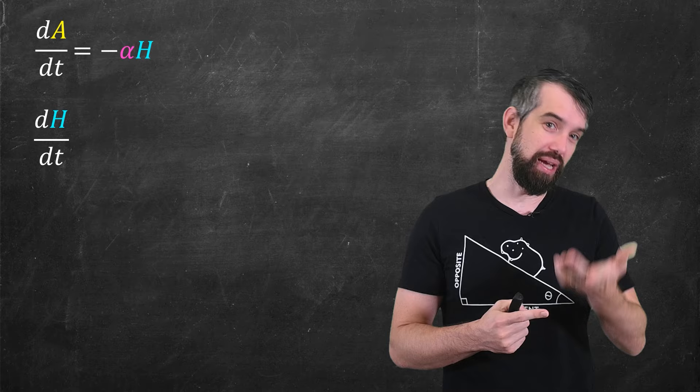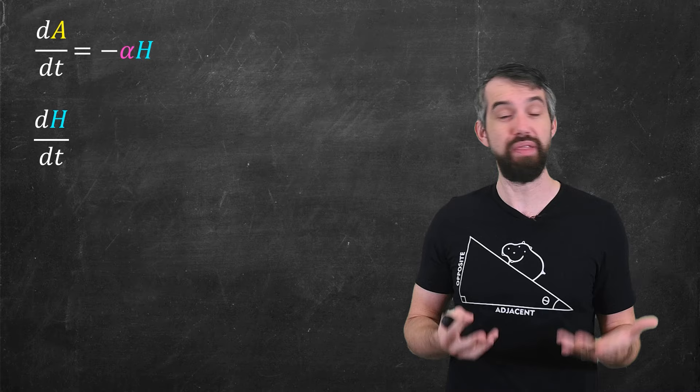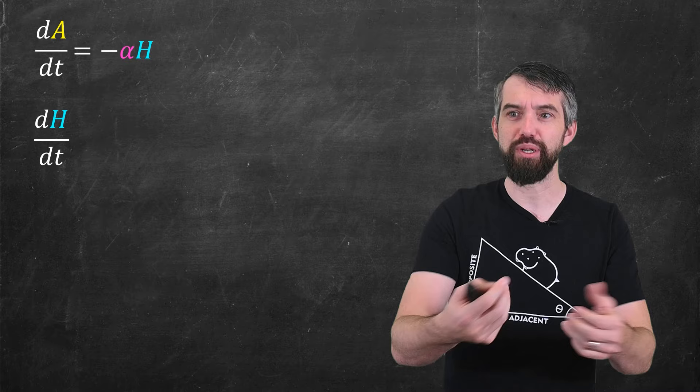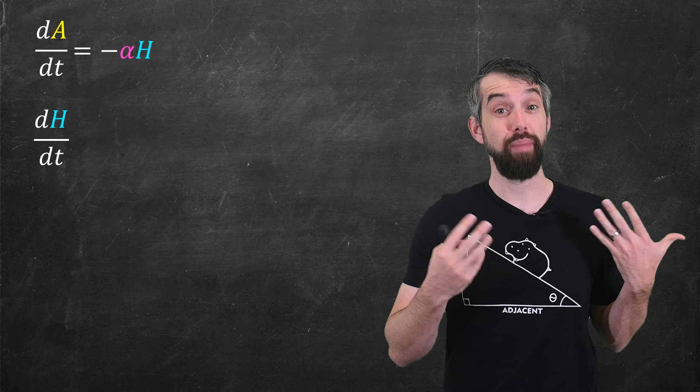Negative, because it's going down. Alpha, some proportionality constant that's always positive, and then the number of humans. If I double the number of humans, there's double the number of projectiles, there's double the rate of losses of aliens. A formula like this makes sense to me.